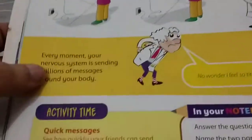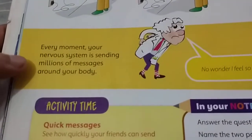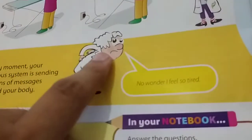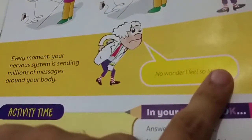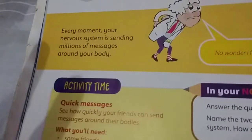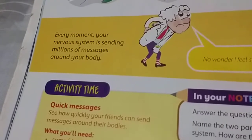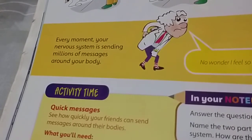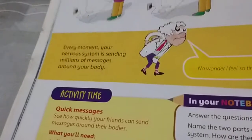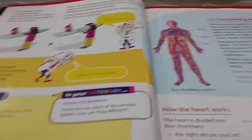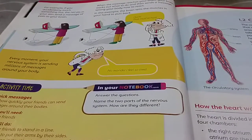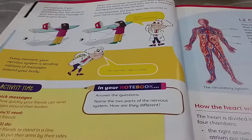Every moment, your nervous system is sending millions of messages around your body. Even when we are sleeping, the brain is still working - we are still breathing, our kidneys are filtering blood, and our circulatory system is working. Some part of the brain is always awake doing its job, because if it stopped, we would die. That was the lesson for today - we will meet next time. Thank you very much, and if you don't understand anything, leave a comment and I will explain it to you. Bye bye!